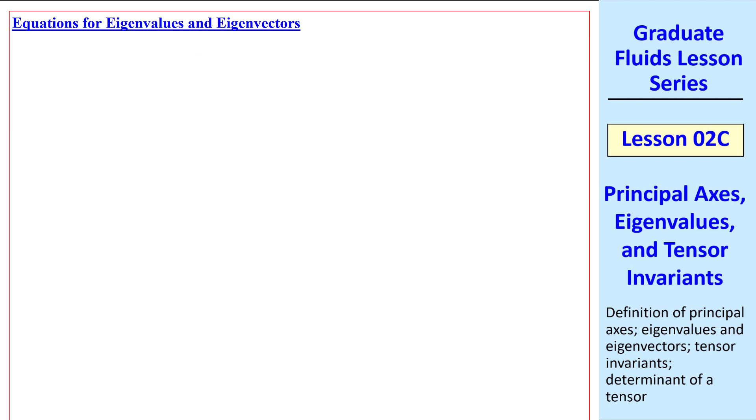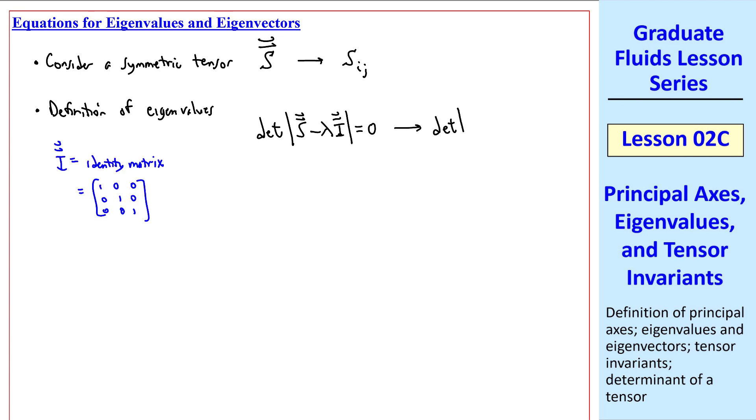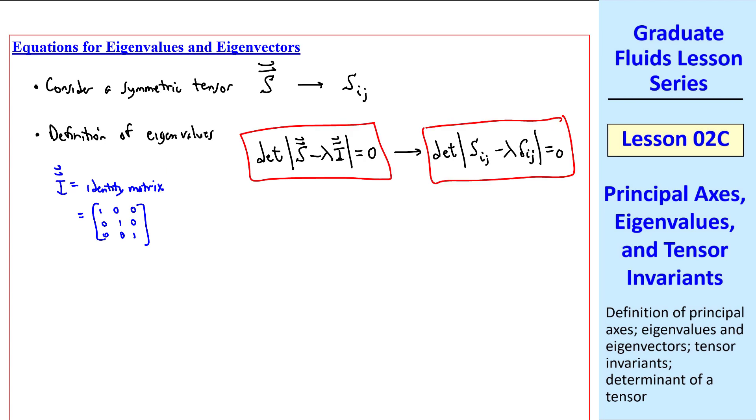The unit vectors pointing in the principal axes directions are called the eigenvectors. Each eigenvalue has a corresponding eigenvector. Shown above is the eigenvector corresponding to the second eigenvalue, the one associated with the rotated axis direction x2 prime. The eigenvector is given the notation b superscript 2 arrow corresponding to eigenvalue lambda superscript 2. I showed you the three components of this vector. Again, these are relative to the original unprimed set of axes, and it's one unit in length, as I sketched above. In other words, it is a unit vector. Now let's look at the equations for eigenvalues and eigenvectors. Let's consider a symmetric tensor, S.